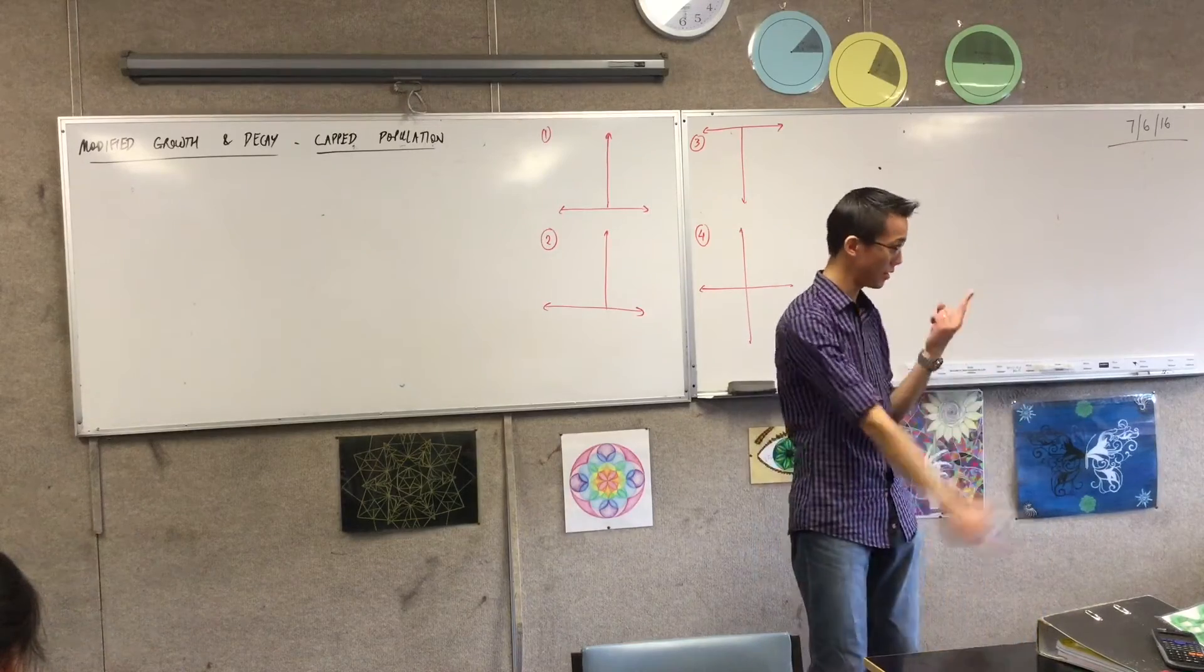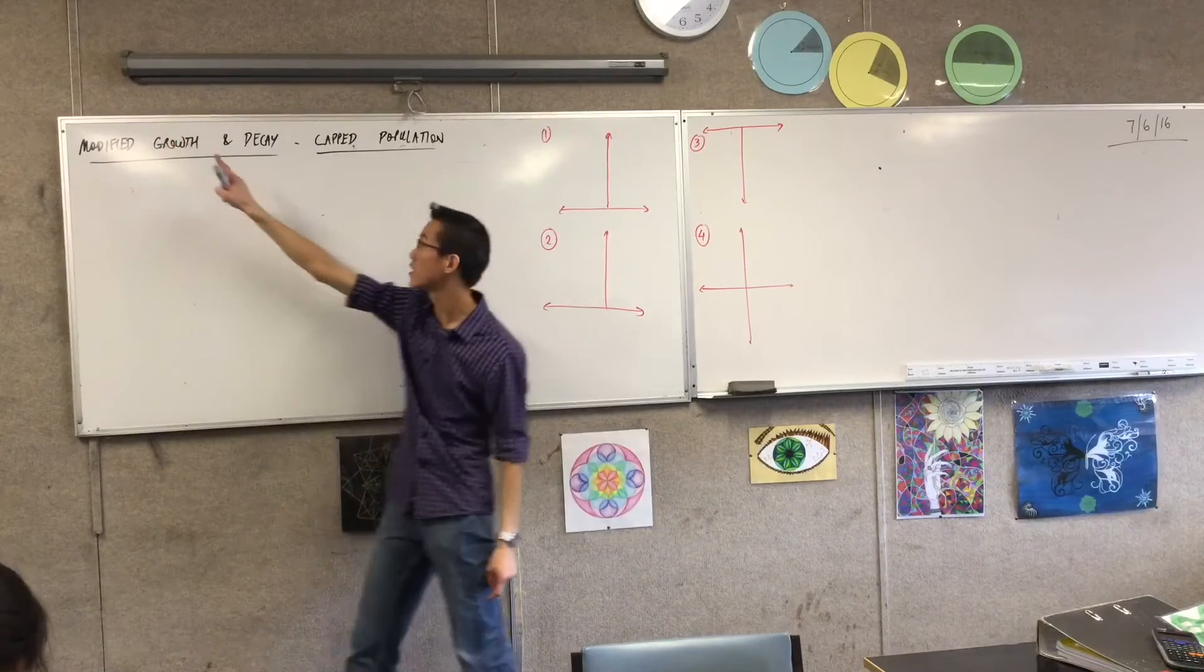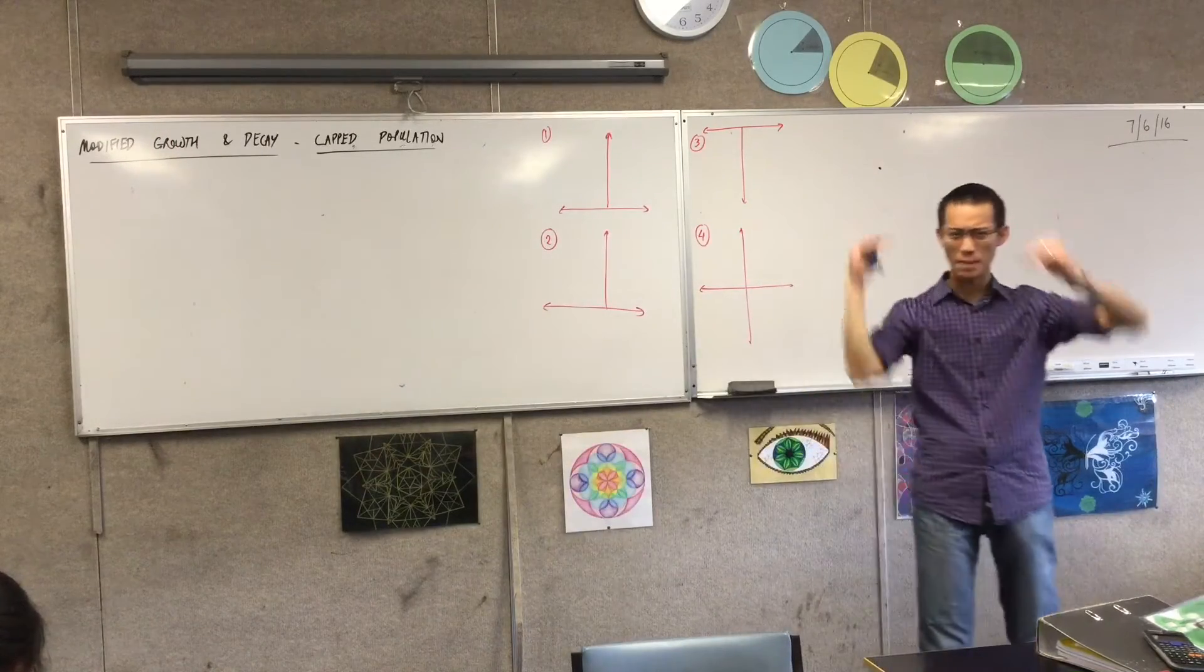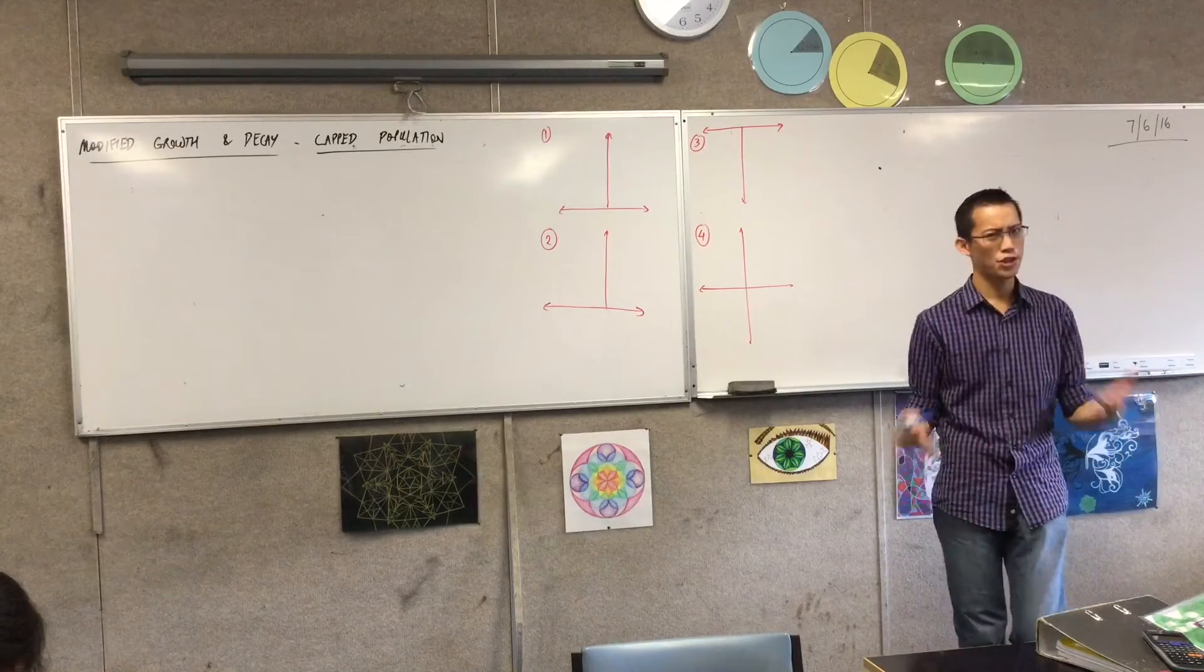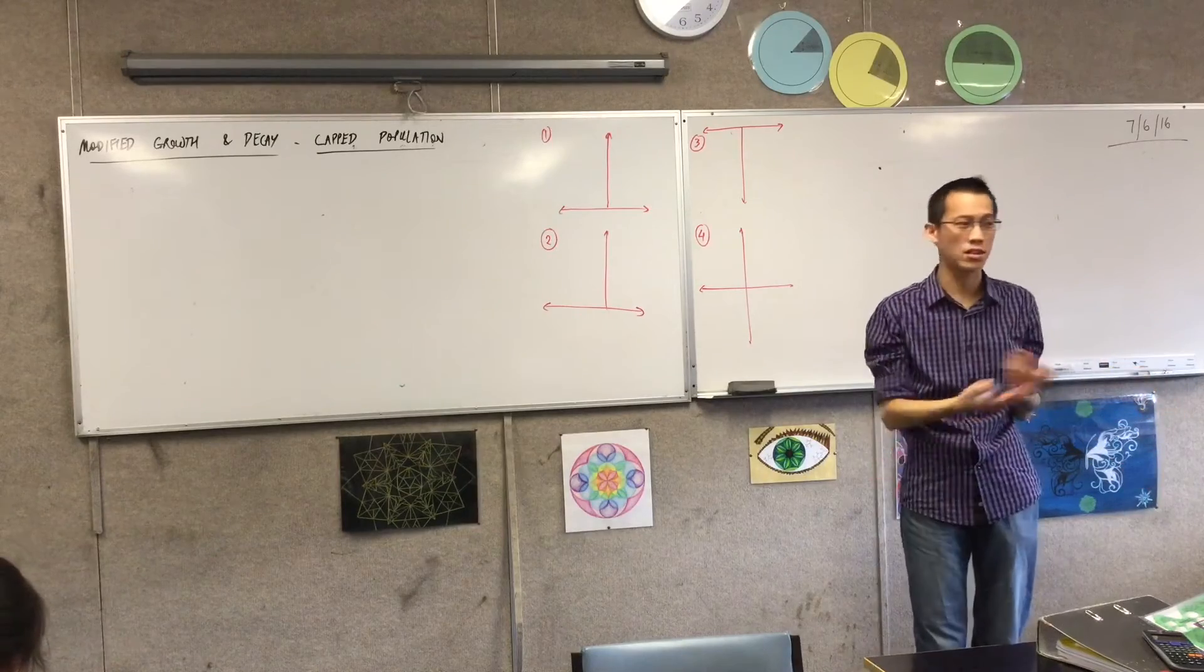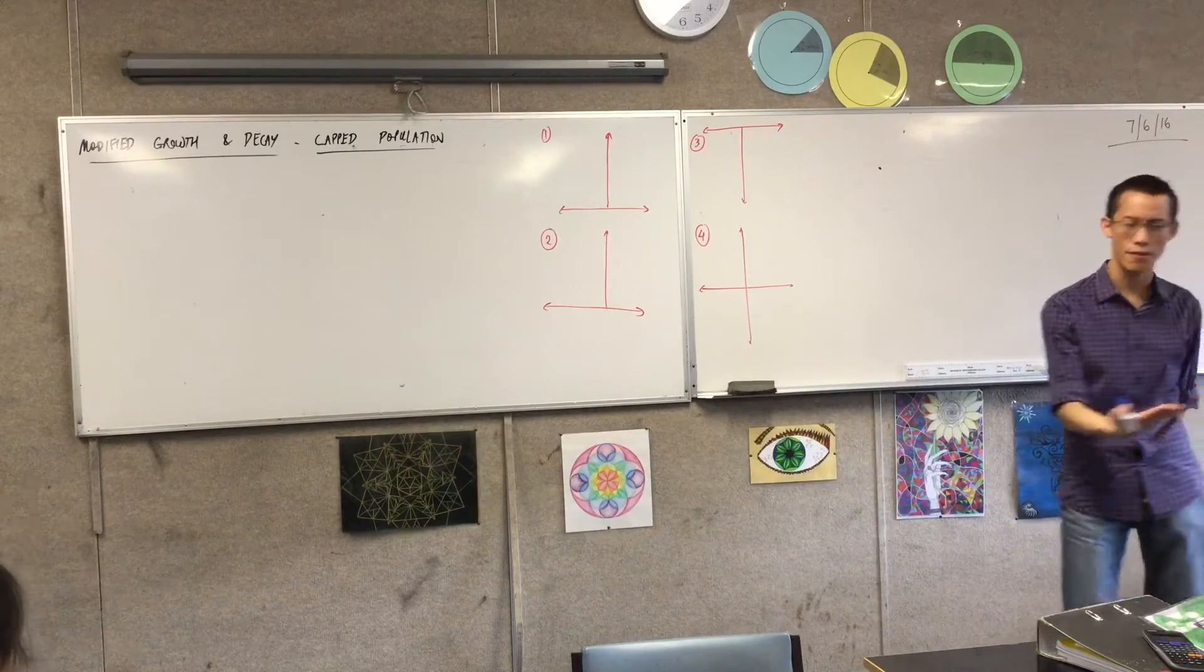You might recall we've been looking at growth and decay, but we're moving to extension 1 later when we said modified growth and decay. The example I gave you was when something is dropping in temperature, but the ambient temperature isn't zero. So as it decreases, it's not going to approach zero, it's going to approach whatever your ambient temperature is. And we call that A for environment.